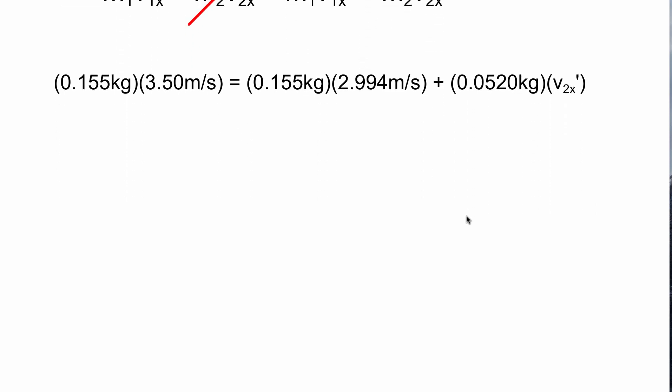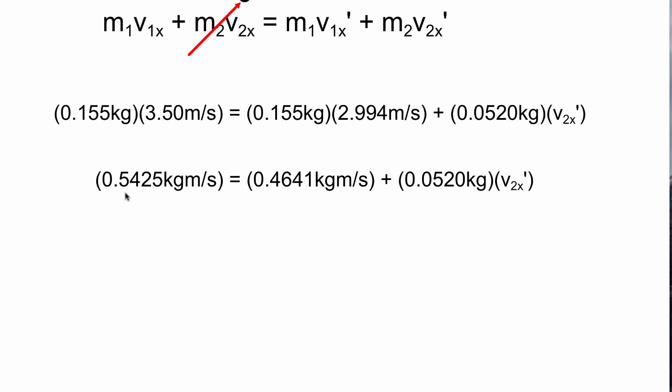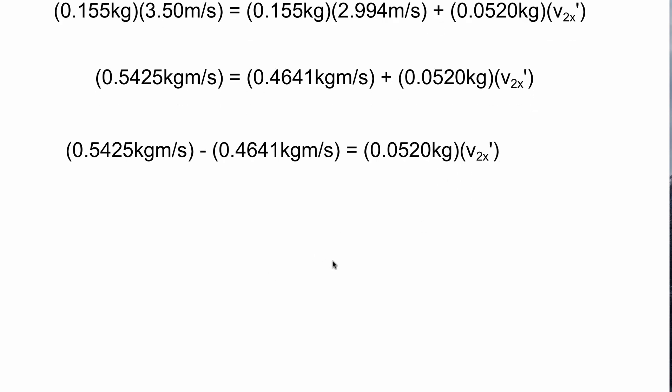Now let's do a little bit of math. Multiply these two terms, it gives me 0.5425 and the units are kilogram meters per second. Multiply these two terms you get 0.4641, again kilogram meters per second. This final term we're just going to leave it. Do our subtraction. We end up getting 0.0784 kilogram meters per second on the left hand side.